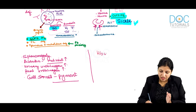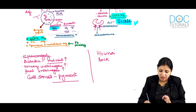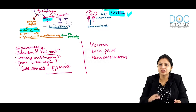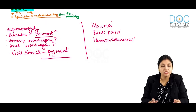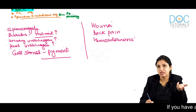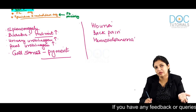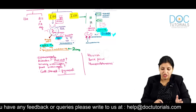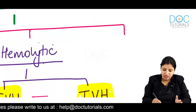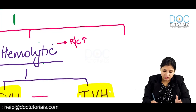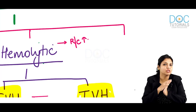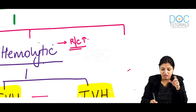Always compare the symptoms: hemoglobinuria, back pain, and hemosiderinuria point to intravascular; splenomegaly, raised indirect bilirubin, and pigmented gallstones point to extravascular. History will help you differentiate. The key clue to any hemolytic anemia is reticulocytosis — when hemolysis occurs, the bone marrow produces more RBCs, so more reticulocytes appear in the circulation. Reticulocytosis is very common in hemolytic anemias.